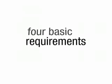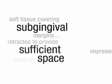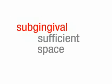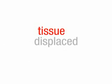There are four basic requirements which must be met in order to assure good tissue management. First, soft tissue covering subgingival margins and axial walls must be retracted horizontally to provide space for a sufficient amount of impression material. Second, tissue at the gingival margins must be displaced vertically to expose the margin. Third, all hemorrhaging must be arrested. And fourth, all hard and soft tissue to be reproduced in the impression must be clean and dry.